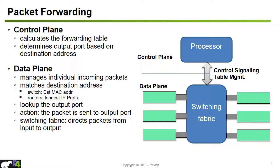There is typically an interface that connects the control plane and data plane together. This interface is used for control signaling so the control plane can install table entries into the data plane, which are then used for forwarding and lookup decisions. Mostly the control plane exercises table management operations — installing or removing table entries — based on the routing protocol functionality of the switch.